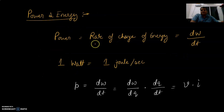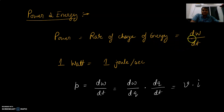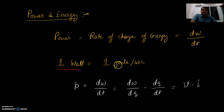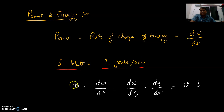Now comes power and energy. Power is the rate of change of energy — dW/dt. The unit of power is watt, which is 1 joule per second. We can write small p as the rate of change of power in terms of dW/dt.